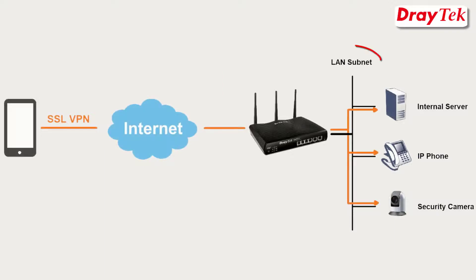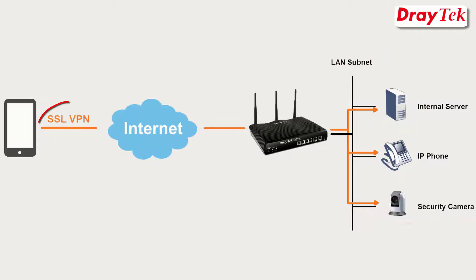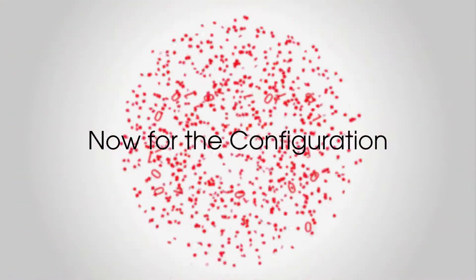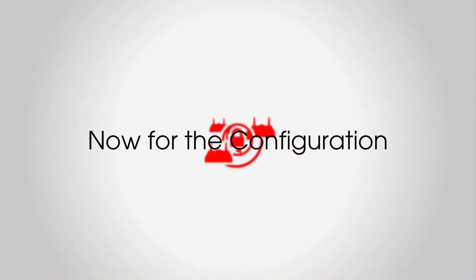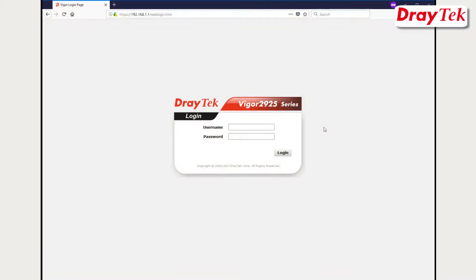To gain access to the LAN subnet and internal services from any location, the user just needs to establish an SSL VPN tunnel to the company network. Let us begin.